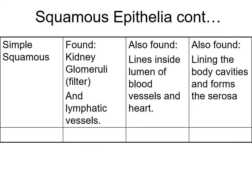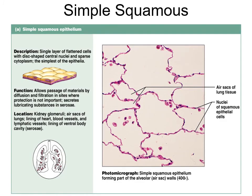Simple squamous epithelial cells produce a thin, watery serosa fluid. It's a single layer of flattened cells whose function is to allow materials to diffuse through. It's found in sites where protection is not so important but secreting a lubricating substance is - such as the serosa. In the alveoli, oxygen diffuses across the surface as a gas, is taken up by the capillary behind the tissue, drains into the heart, and is pumped through the body.